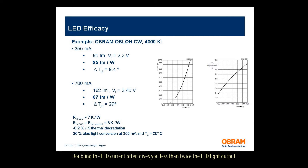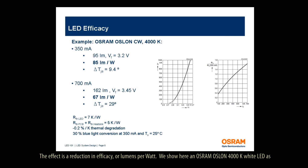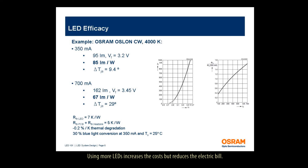Doubling the LED current often gives you less than twice the LED light output. A higher LED current also requires a larger forward voltage. The effect is a reduction in efficacy, or lumens per watt. We show here an Osram Aslan 4000K white LED as an example. The efficacy in this example goes from 85 lumens per watt at 350 milliamps down to 67 lumens per watt at 700 milliamps. Using more LEDs increases the cost, but reduces the electric bill.